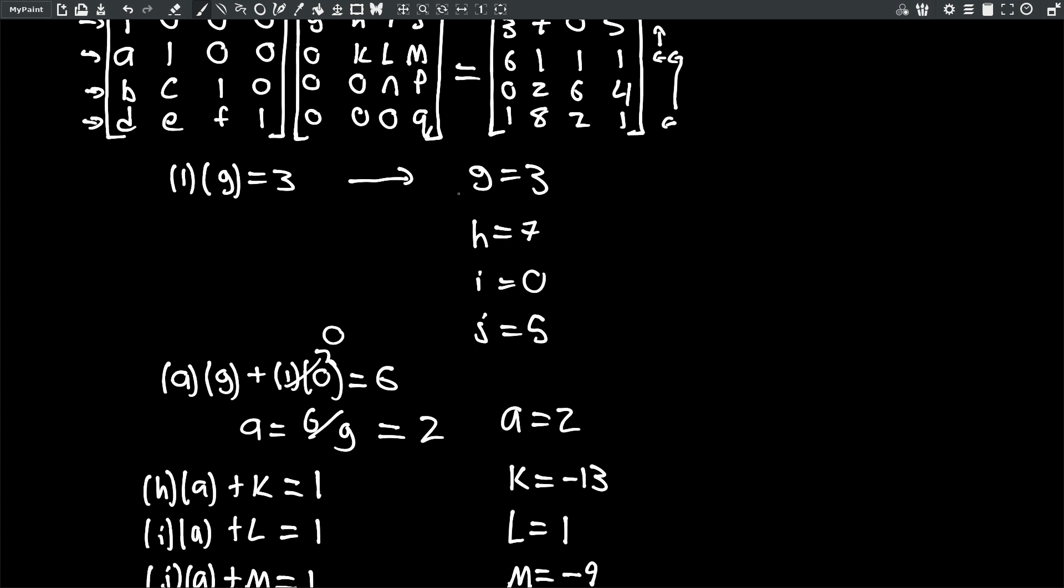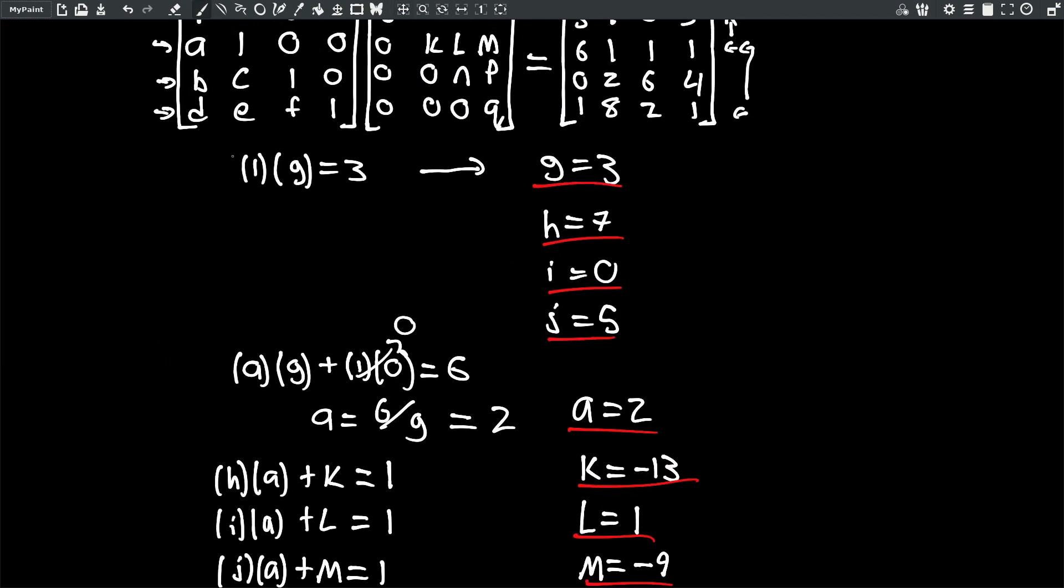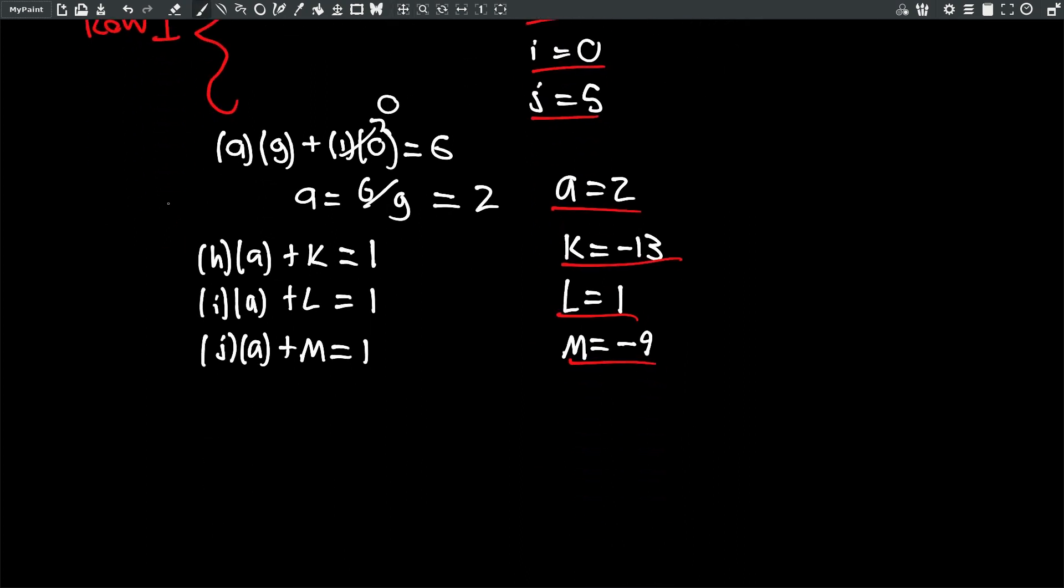I'm just going to continue along similarly for this row column multiplication here. And just for ease of viewing, I'm going to separate these out. So this is the first row.